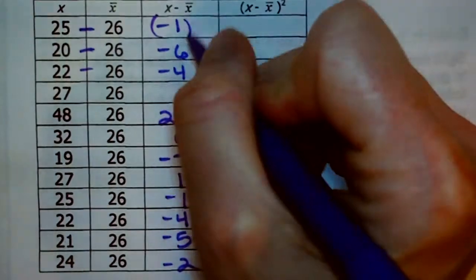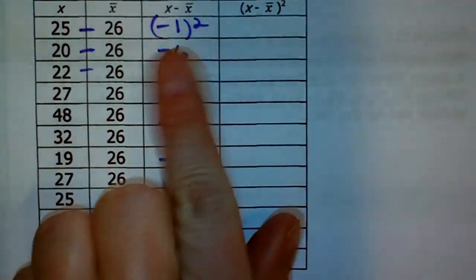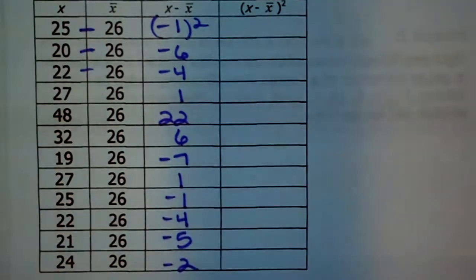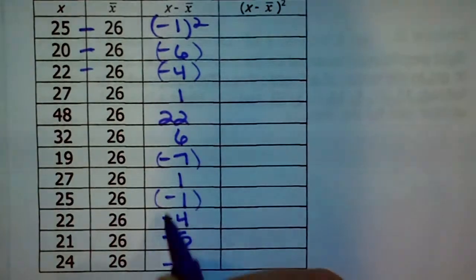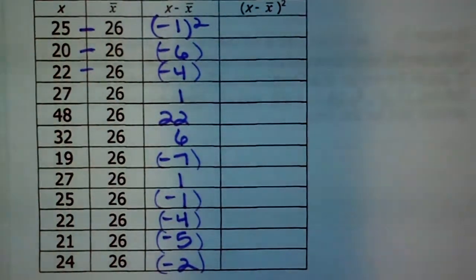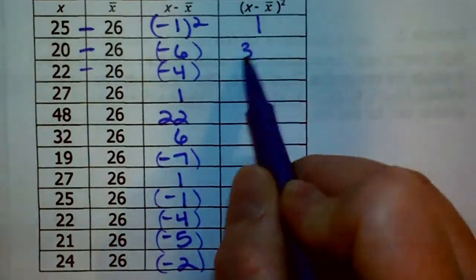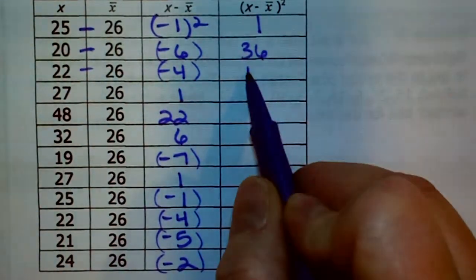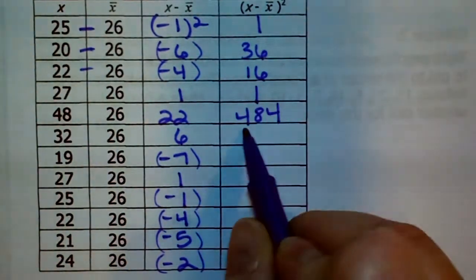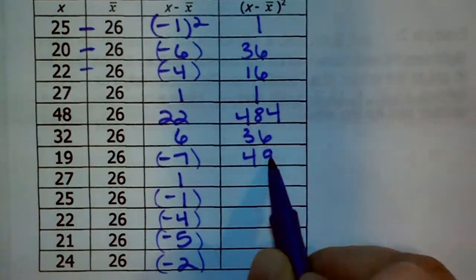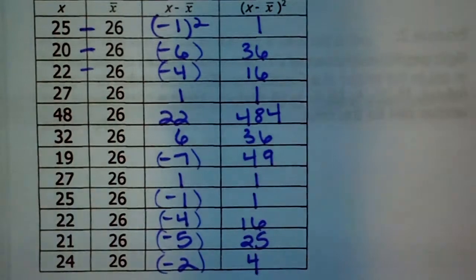Now it's our job to square it. Remember: if the result is negative, treat it as the quantity — square the negative version of it, putting parentheses around all negatives so you don't forget. Negative 1 squared is 1, negative 6 squared is 36, then 16, 1, 484, 36, 49, 1, 1, 16, 25, and 4.